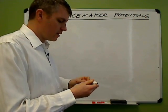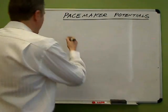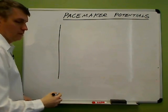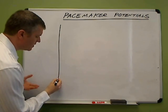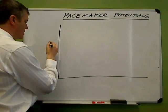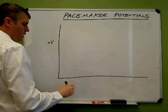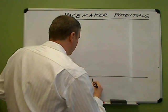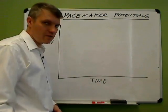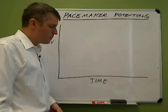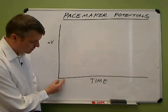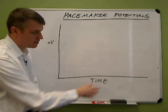So we're going to look at pacemaker potentials, and the way I like to do that is the same way we looked at action potentials. We've got a graph here that has, again, on the y-axis millivolts and on the x-axis time. Now this graph is going to differ from the other ones in that there's a lot more time involved.